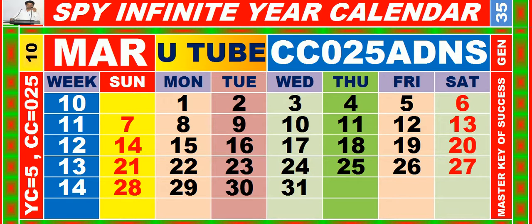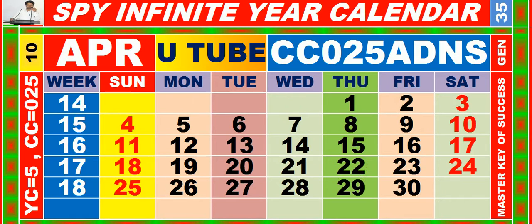Calendar for the month of March, having calendar code equal to 025. Calendar for the month of April, having calendar code equal to 025.